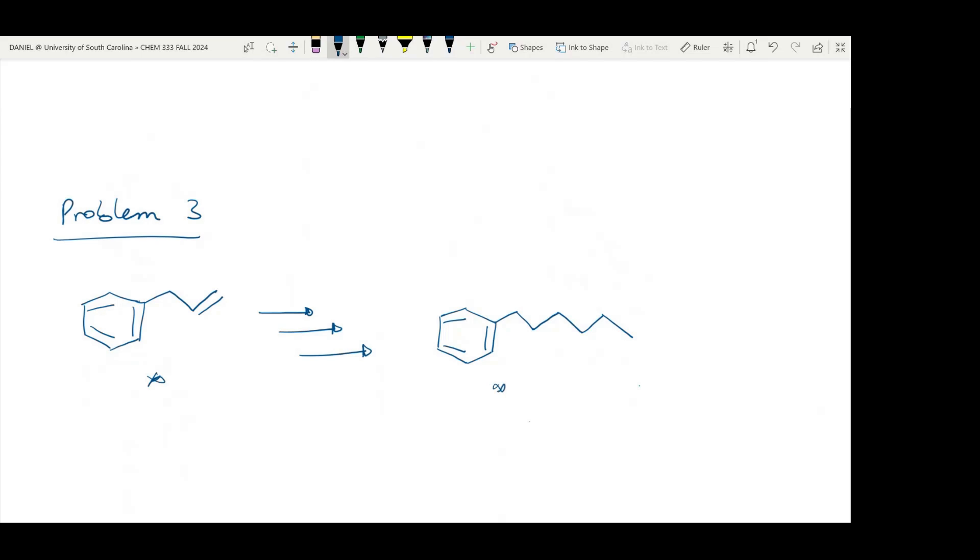Let's apply retrosynthesis to solving this particular problem. The first thing to do in solving this synthesis problem is to compare the starting material and the product. If you number the substituents on the benzene ring in the starting material and the product, you will notice that there are three extra carbons on the substituents in the product.